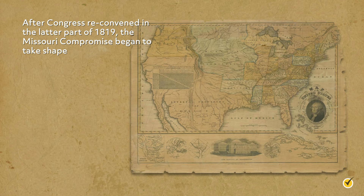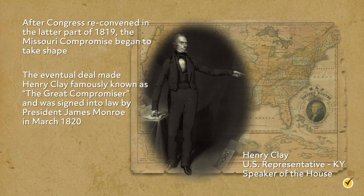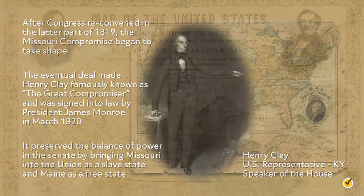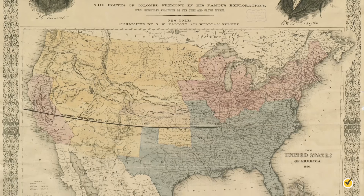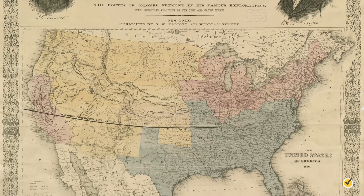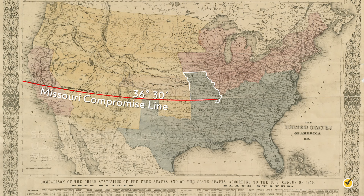The temptation of allowing Missouri to enter as a slave state and Maine as a free state was too strong to resist. After Congress reconvened in the latter part of 1819, the Missouri Compromise began to take shape. The eventual deal, which made Speaker of the House Henry Clay famously known as the Great Compromiser, was signed into law by President James Monroe in March 1820. It preserved the balance of power in the Senate by bringing Missouri into the Union as a slave state and Maine as a free state. In addition, the Missouri Compromise laid down a rule that banned slavery in new U.S. territories north of the line of latitude at 36 degrees 30 minutes, with Missouri as an exception since it was north of that line.